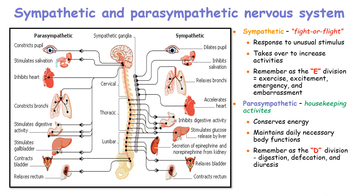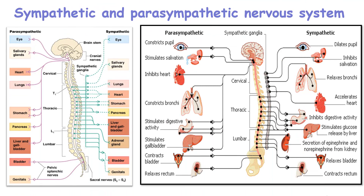Those are a clear overview of the sympathetic and parasympathetic nervous system. This other image also gives an outlook of the controls and effects of the parasympathetic and sympathetic nervous system using two diagrams.